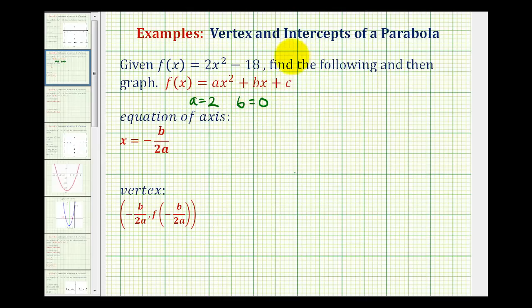C is the constant term, so c equals negative 18. For the equation of the axis, we have x equals negative 0 over 2 times 2, which is 0 over 4, which equals 0. So the equation of our axis of symmetry is x equals 0, which would be the y-axis.